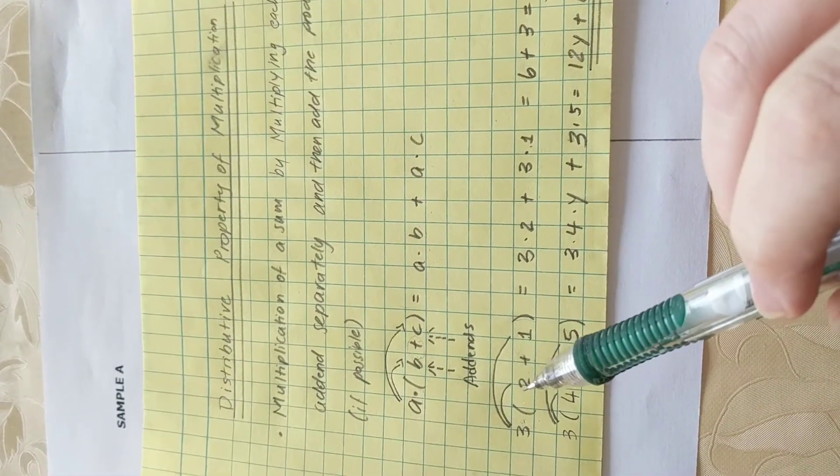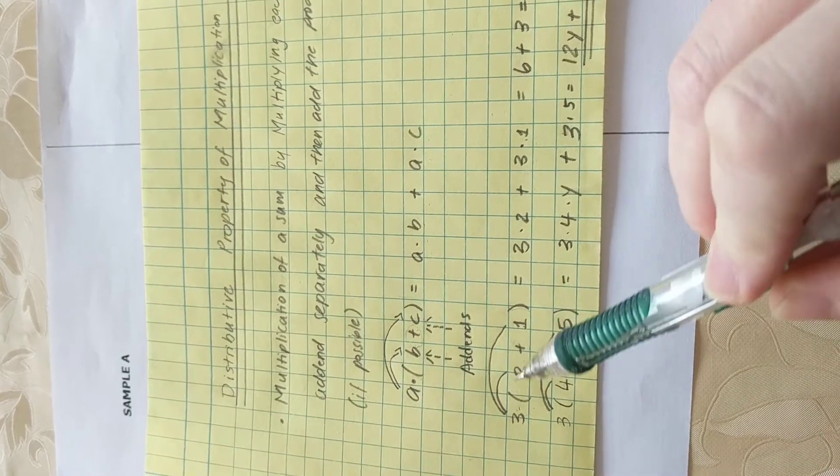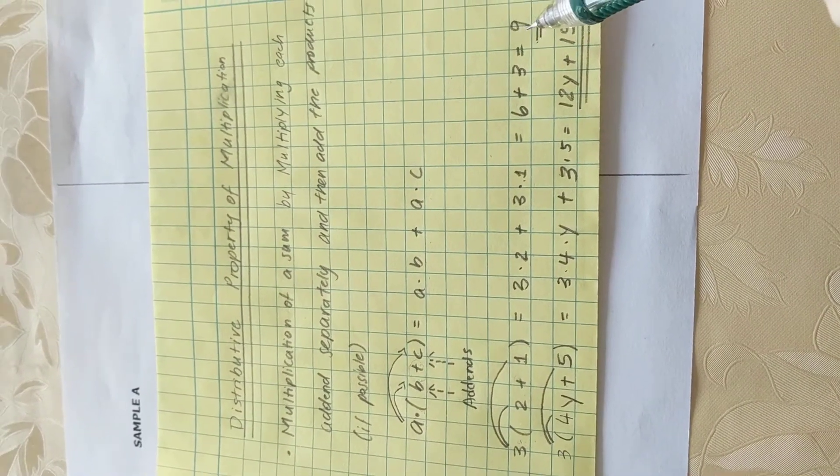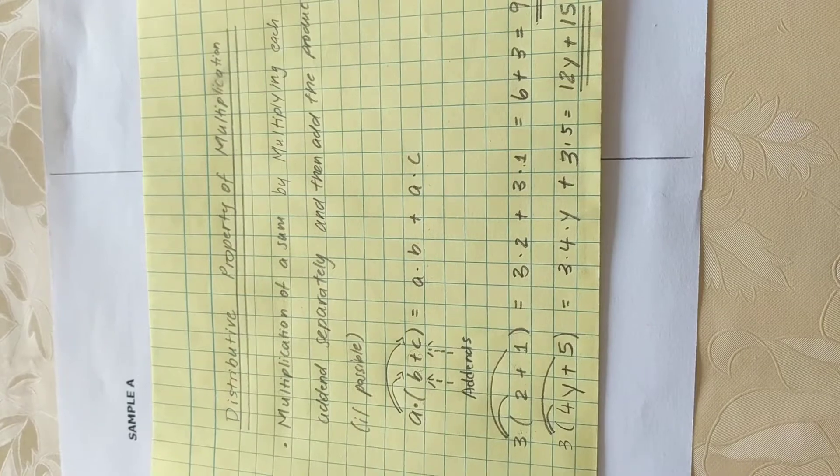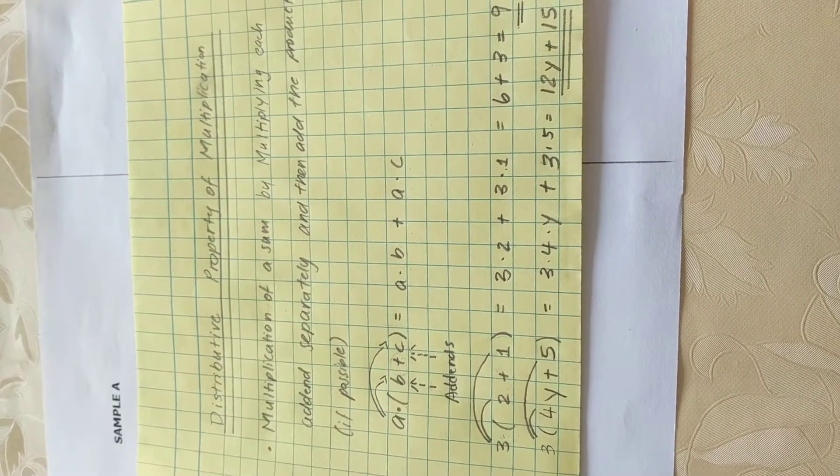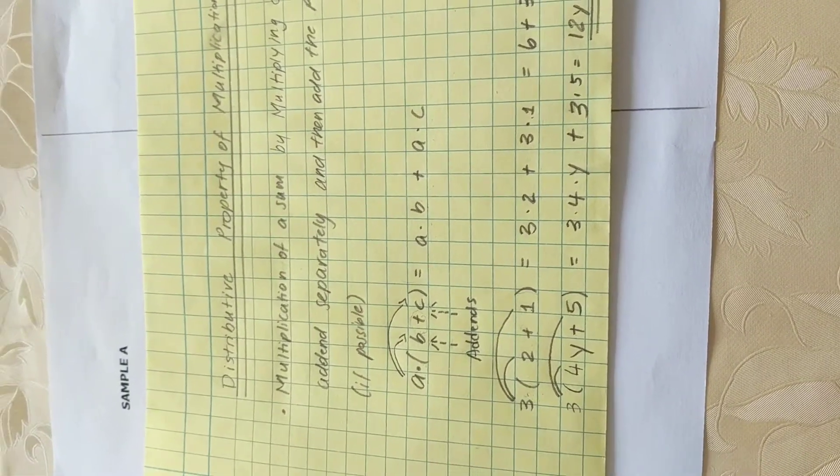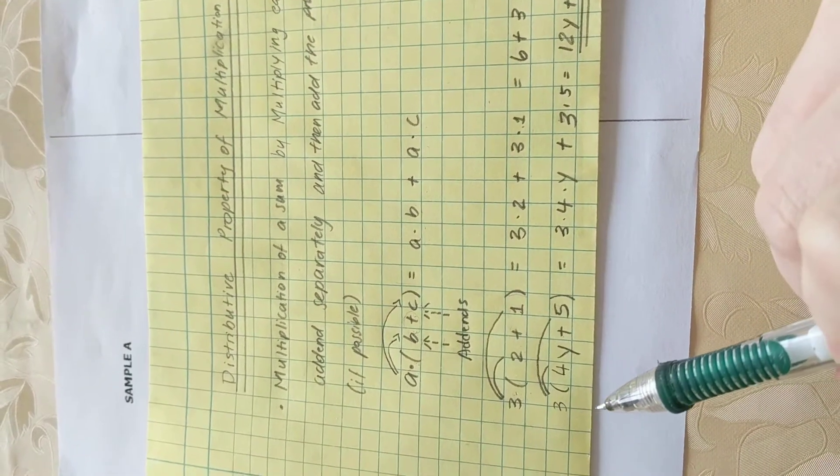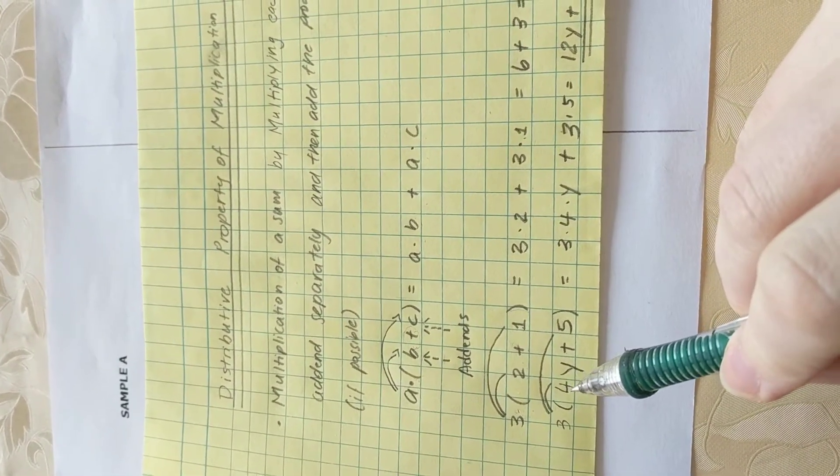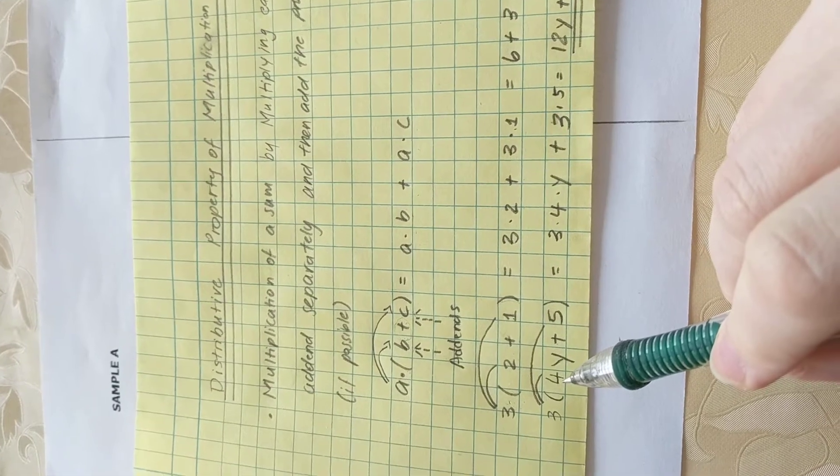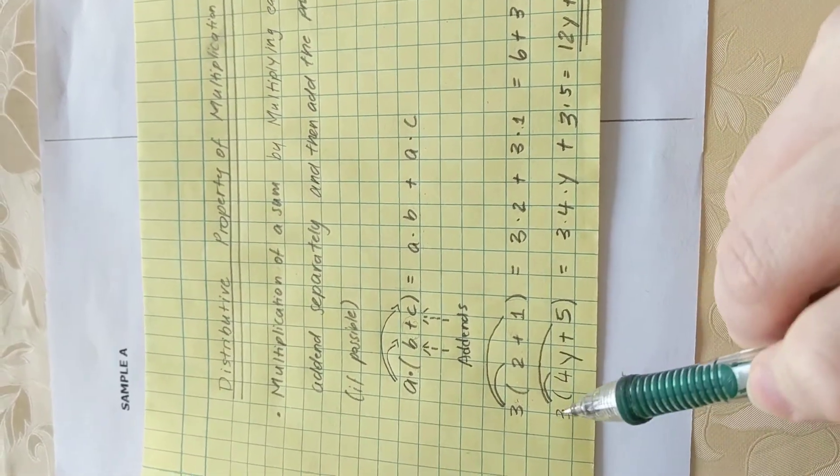Now, could we have said two plus one is three times three is equal to nine? Well, most certainly, but I'm trying to prove the distributive property of multiplication or how it applies. Therefore, I chose the long way. And there are instances when you cannot add the terms inside the parentheses. For example, let's look at the next example.